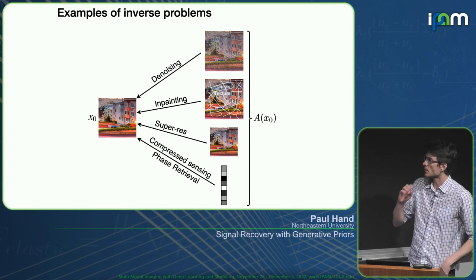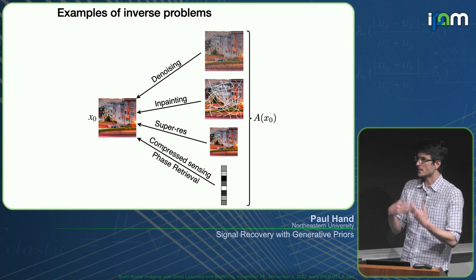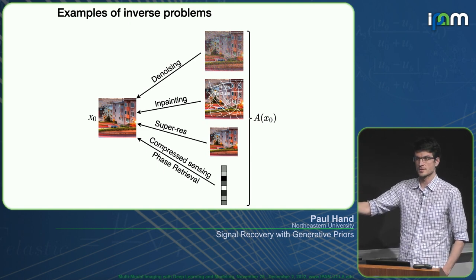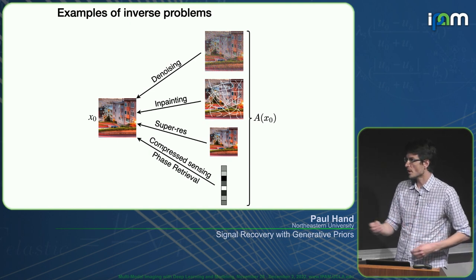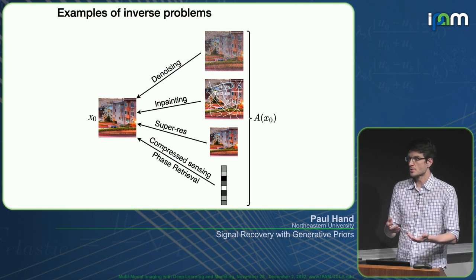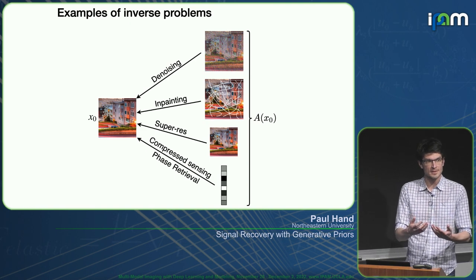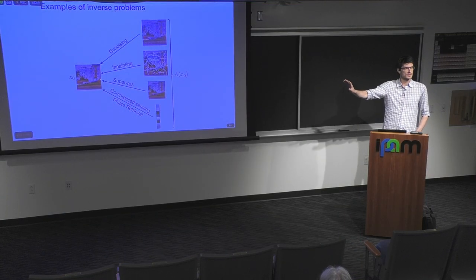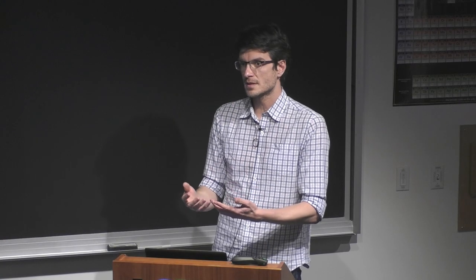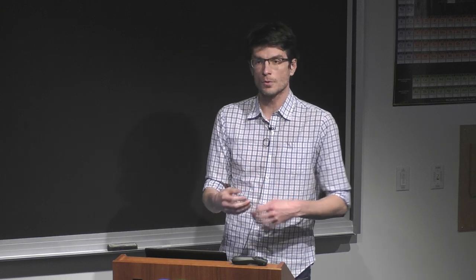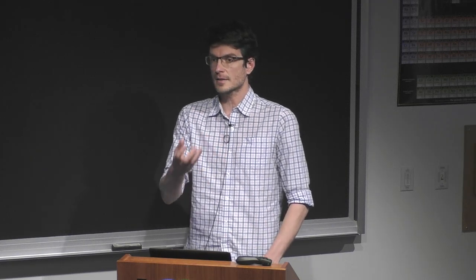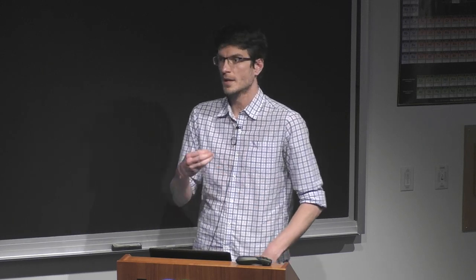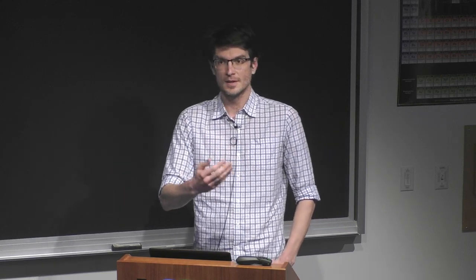We're going to look at inverse problems of the form of denoising, compressed sensing, or phase retrieval. The story will be: I have some signal x₀, think of this as an image. I have some measurements of x₀ — call that A(x₀) — and these could be partial, noisy, or indirect measurements. The goal is to go from A(x₀) back to x₀. A central challenge is that due to noise and relatively few measurements, the problem is underdetermined, and you must use some prior — some understanding of the real world — to choose the most natural solution.